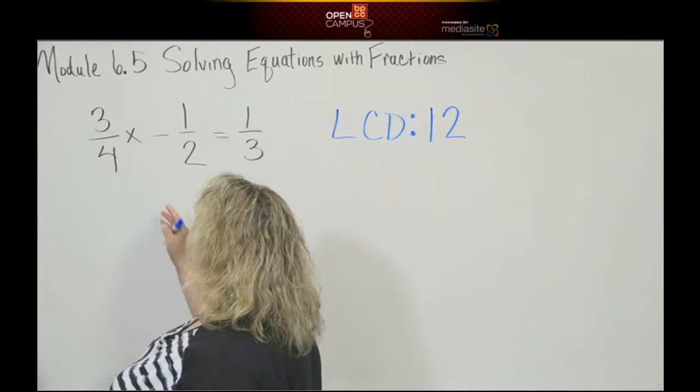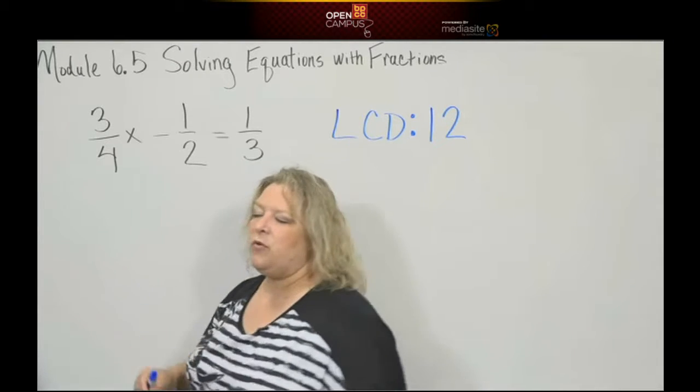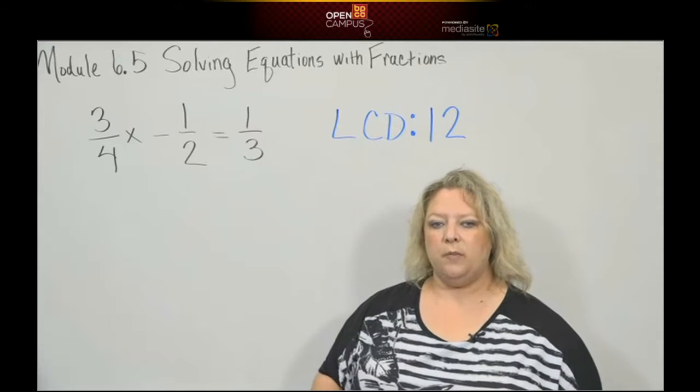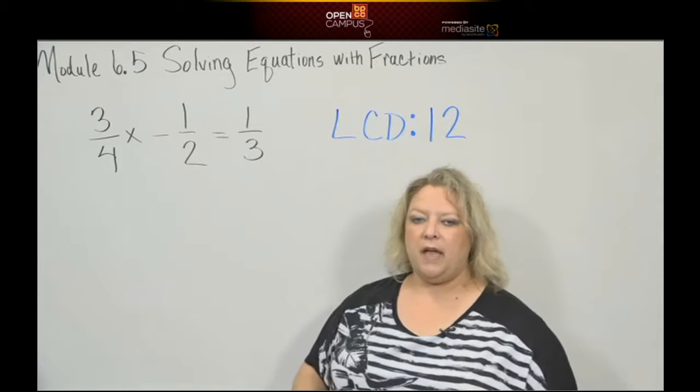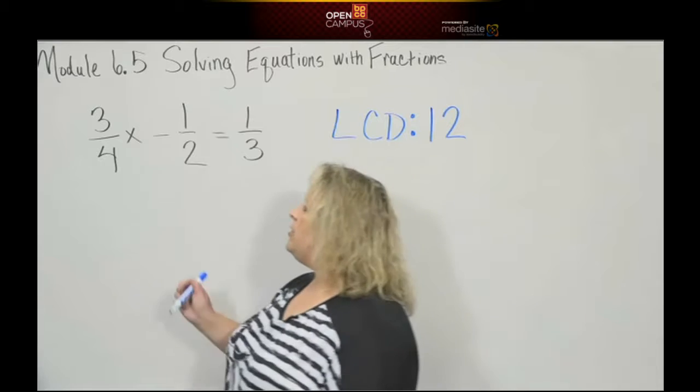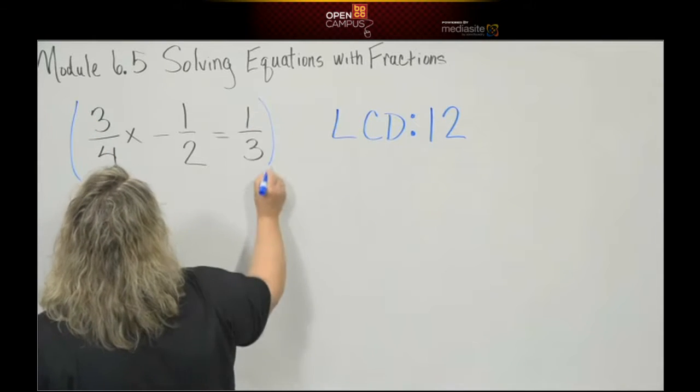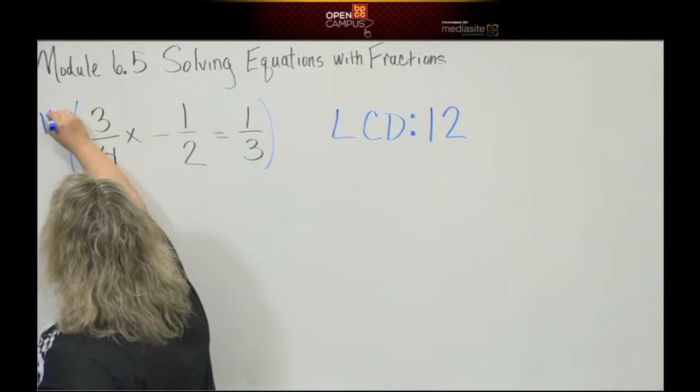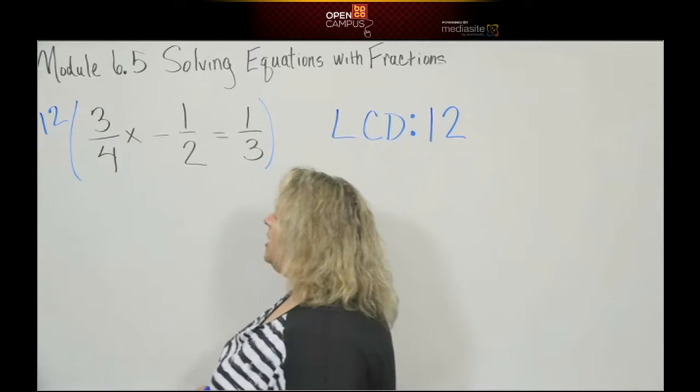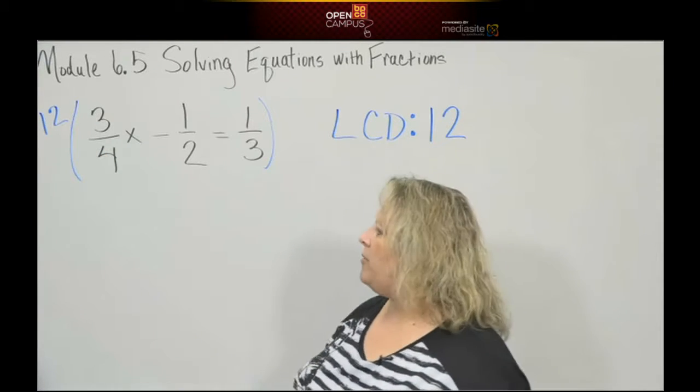Once you find your common denominator, the next thing that you want to do is multiply each term in the problem by that common denominator. Now you can do one of two things. You can either write your twelve out here, your least common denominator, and do distributed property that way, or you can physically write it down, which is what I like to do.